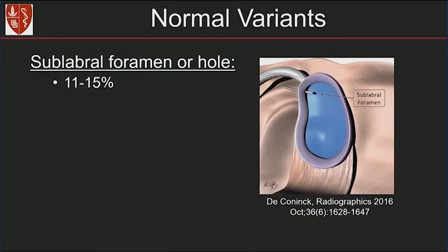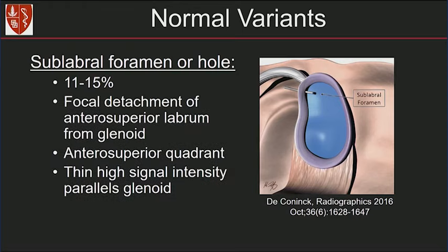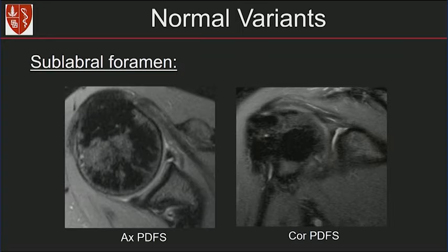The sublabral foramen occurs in about 15% of cadaver studies. It represents focal detachment of the anterior superior labrum from the glenoid, with high signal intensity that parallels the glenoid. Here's the sublabral foramen on MR with axial and coronal PDFS sequences. You can see a cleft separation of the anterior superior labrum from the glenoid, with coronal images nicely showing this cleft paralleling the glenoid.